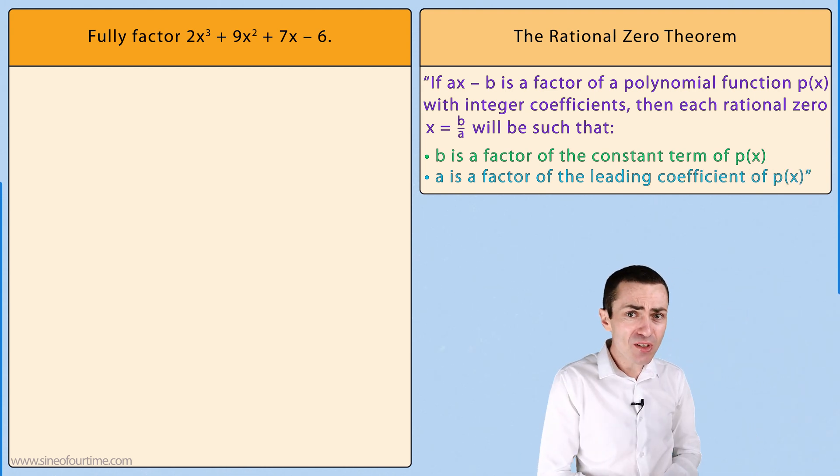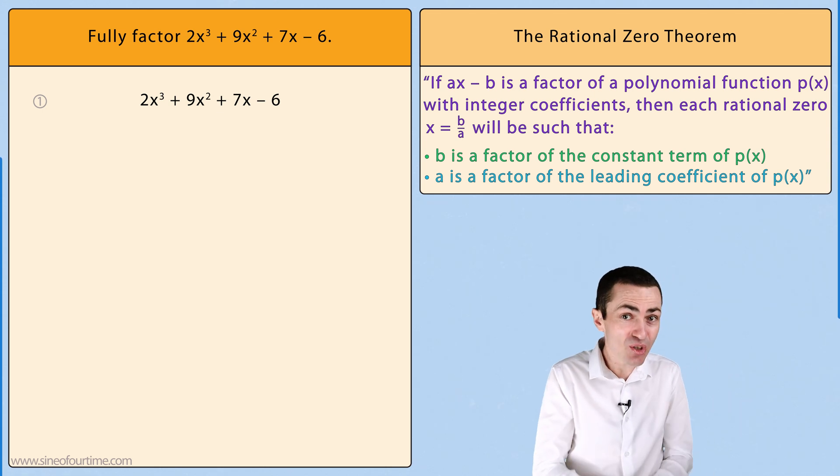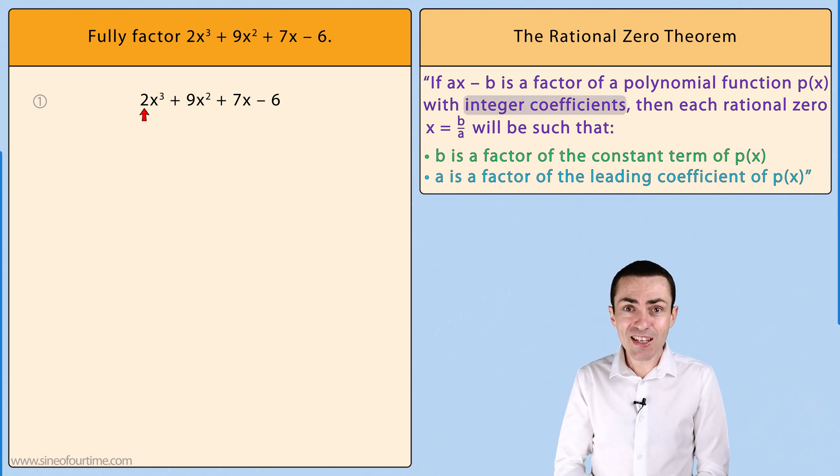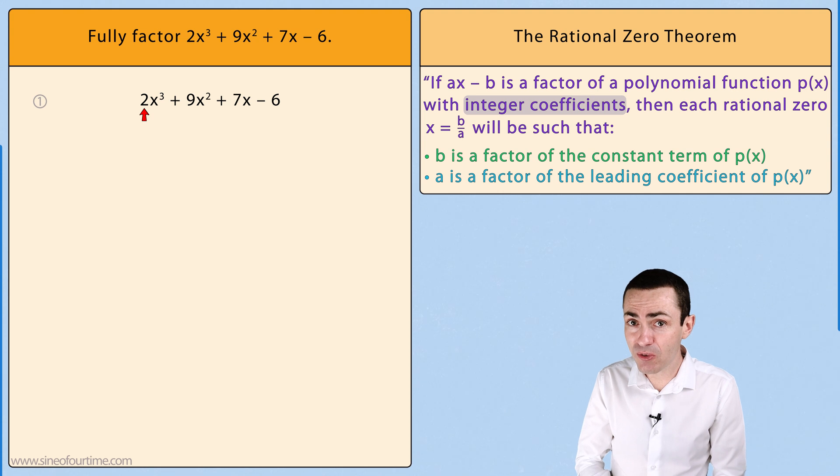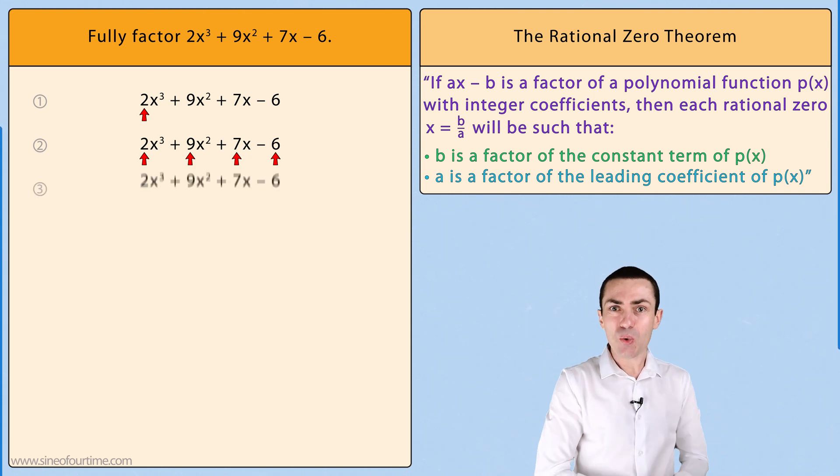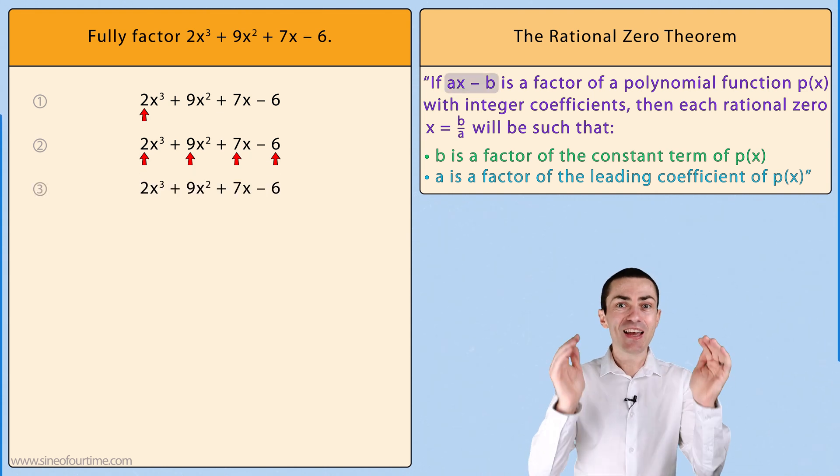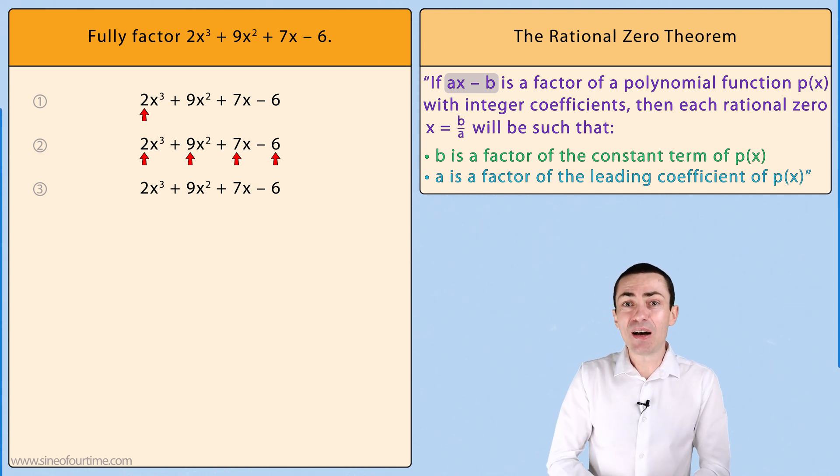Breaking this down let's first ensure that the leading coefficient is not equal to 1, which clearly it isn't since the leading coefficient is equal to 2. Next, let's check to see that all of the coefficients are integers, which is the case.